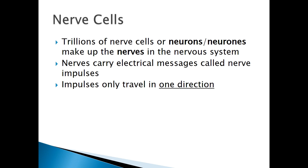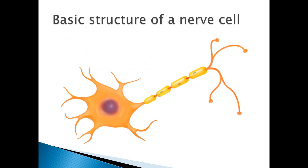Nerves carry electrical messages called nerve impulses, and these impulses can only travel in one direction — they can't go backwards. Nerve cells are the basic building block of the nervous system and they transport electrical messages throughout the body. But what does a nerve cell actually look like?